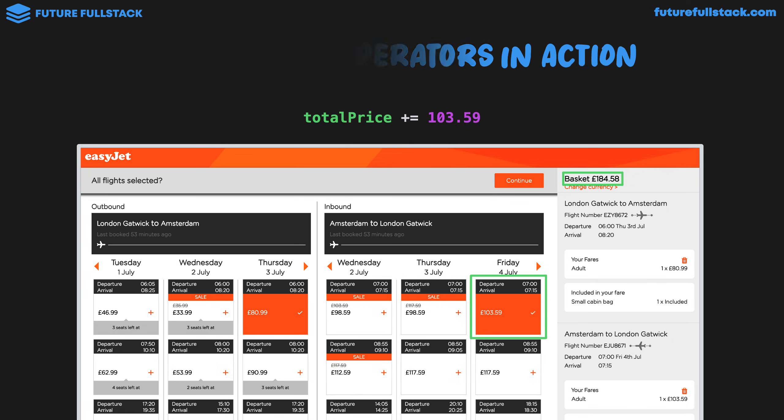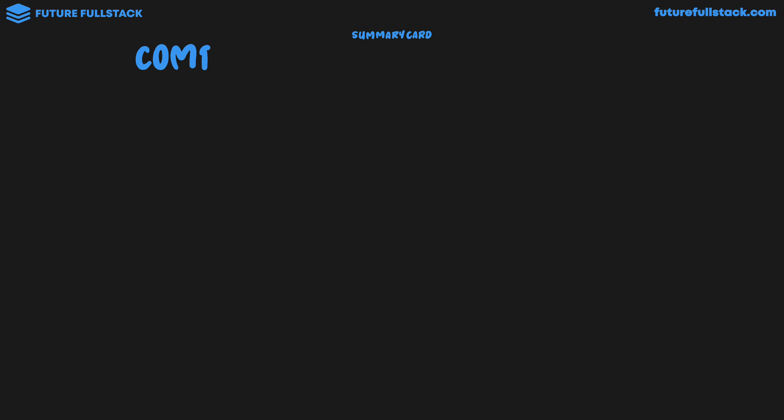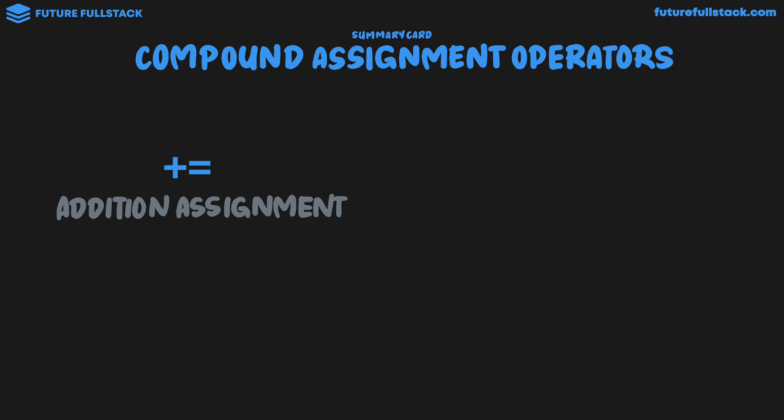So let's wrap up the theory of this video by building a summary card. Compound assignment operators: initially looked at addition assignment using the plus equals symbol, where we can have, for example, let price equal 100 and simply add to this price like this: price plus equals 20. This changes the price value to 120. And it's a more concise way of writing price equals price plus 20.